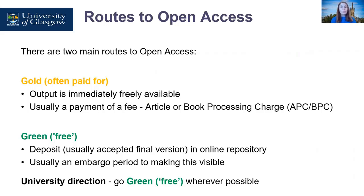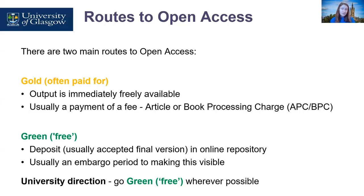Many publishers require payment by or on behalf of the author if they offer an option to make the published version freely available. Some publishers will allow authors to deposit the text of the final accepted manuscript into an online repository where it can be made open access, usually after an embargo period — typically one to five years for books. Some publications are fully open access where everything is automatically open access, and sometimes this is free but more often the publisher will apply a charge.